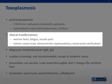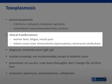Symptoms in infected women include fever, fatigue, muscle pain, maculopapular rash, and posterior cervical lymphadenopathy. However, symptoms only present in a minority of cases. Most infants are also asymptomatic at birth. However, 55% to 85% develop sequelae, including the classic triad of chorioretinitis, hydrocephalus, and intracranial calcifications.